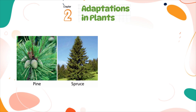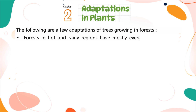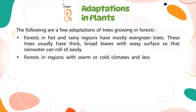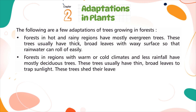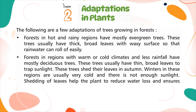There are some trees that shed all their leaves once a year — such trees are called deciduous trees. These trees have many branches and broad leaves, and they look bare after shedding all their leaves. Gulmahar, sal, and champa are some deciduous trees. Forests in hot and rainy regions have mostly evergreen trees with thick, broad leaves with waxy surface so that rainwater can roll off easily. Forests in regions with warm or cold climates and less rainfall have mostly deciduous trees with thin, broad leaves to trap sunlight. These trees shed their leaves in autumn. Winters in these regions are usually very cold with not enough sunlight, and shedding of leaves helps the plants reduce water loss and ensures the trees are not damaged by snow and frost.